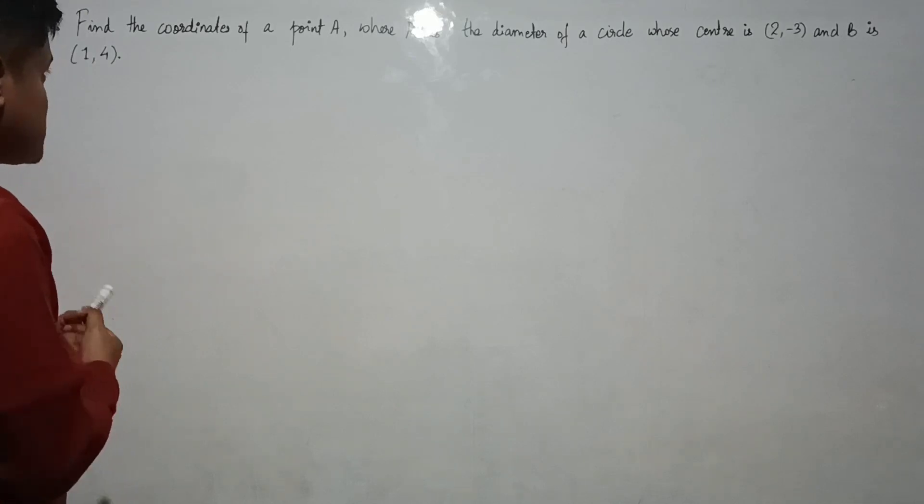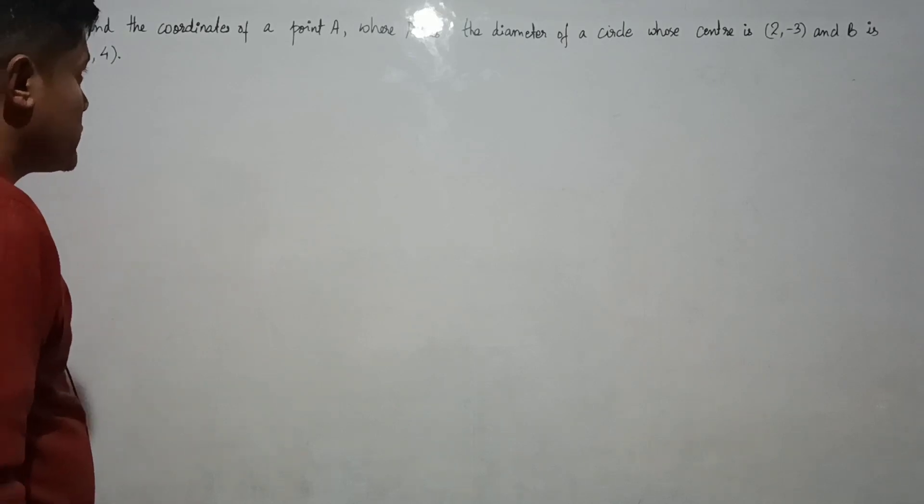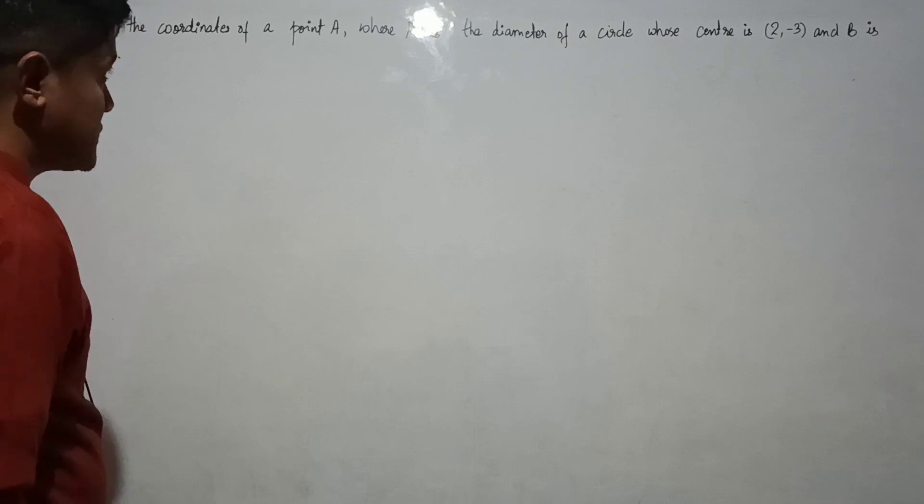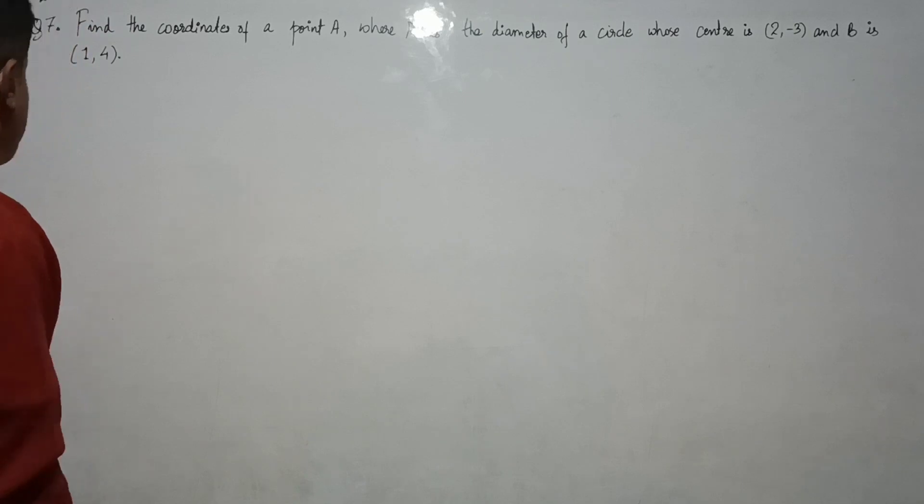Question number 7. Find the coordinates of a point A where AB is the diameter of a circle whose center is (2, -3) and B is (1, 4).